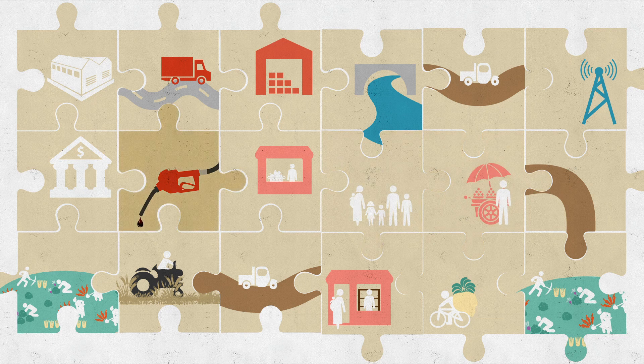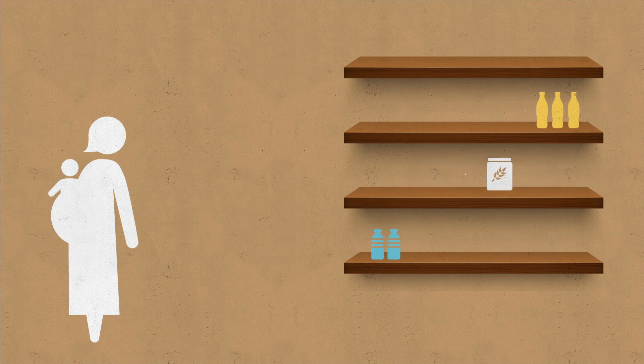And these chains can be vulnerable, and can take time to be affected. Goods might be on the shelves for now, but what about in a month?